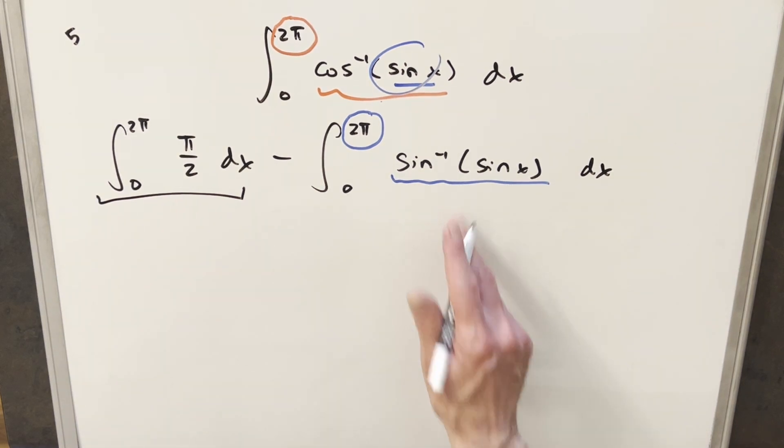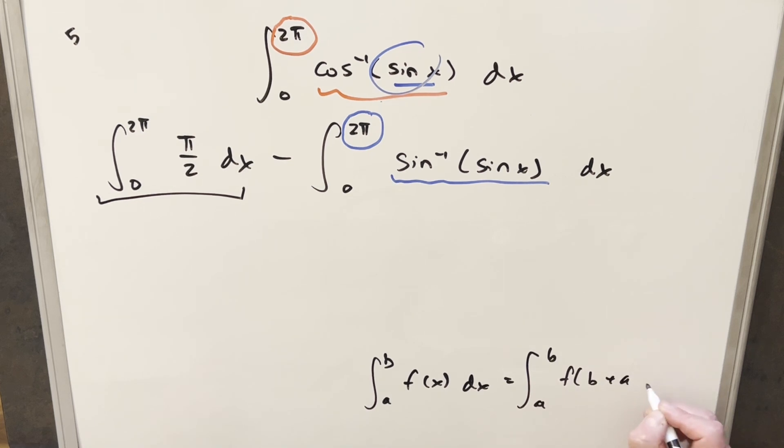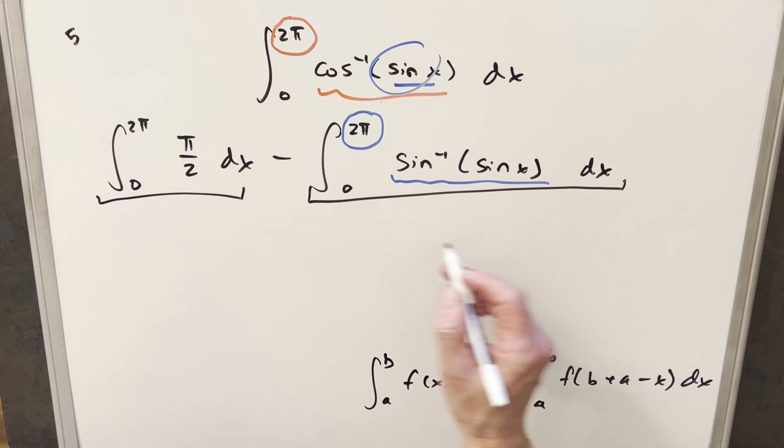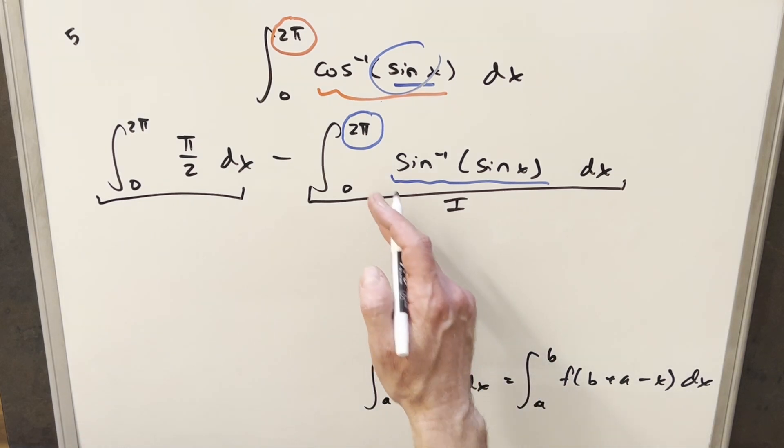So what we can actually do on this is just use King's principle. So that tells us that if we have an integral from b to a, we can just manipulate that and get back the same integral. But our f of x becomes f of b plus a minus x. So just focusing on the integral here, we'll call this i. And when we do this operation on this, our b plus a value here is going to be two pi plus zero. So this is just going to be two pi.